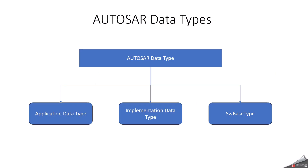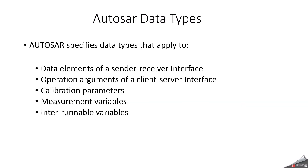In Autosar, we have three data types: one is the application data type, another one is the implementation data type, and another one is the software base type.